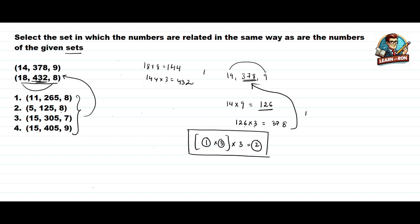Now checking the options. First option: 11 times 18 is 88, and 88 times 3 gives a unit digit of 4, but the given number has unit digit 5 — not our option. Next: 8 times 5 is 40, and 40 times 3 gives a unit digit 0, but they've given a unit digit 5 — not our option. Next: 15 times 7 is 105, and 105 times 3 is 315, but they've given 305 — not our option.